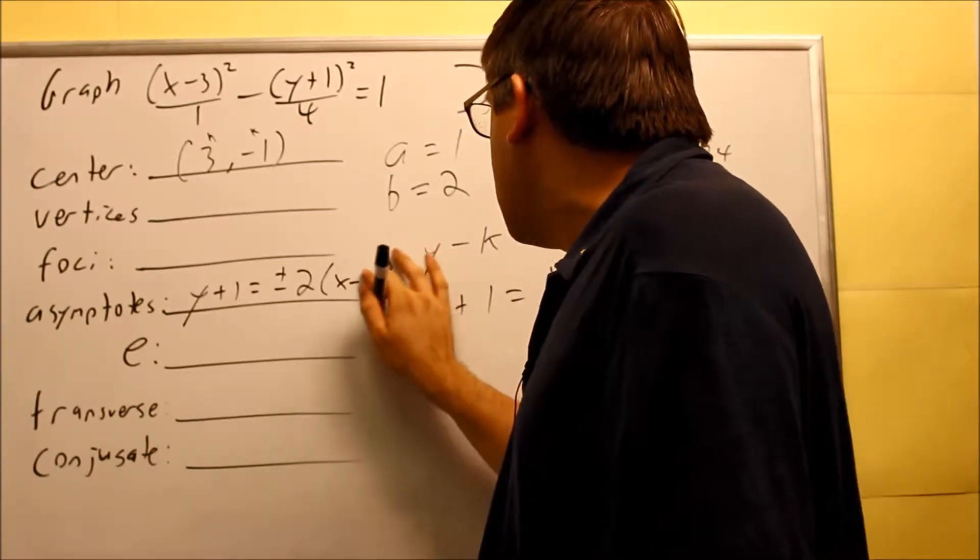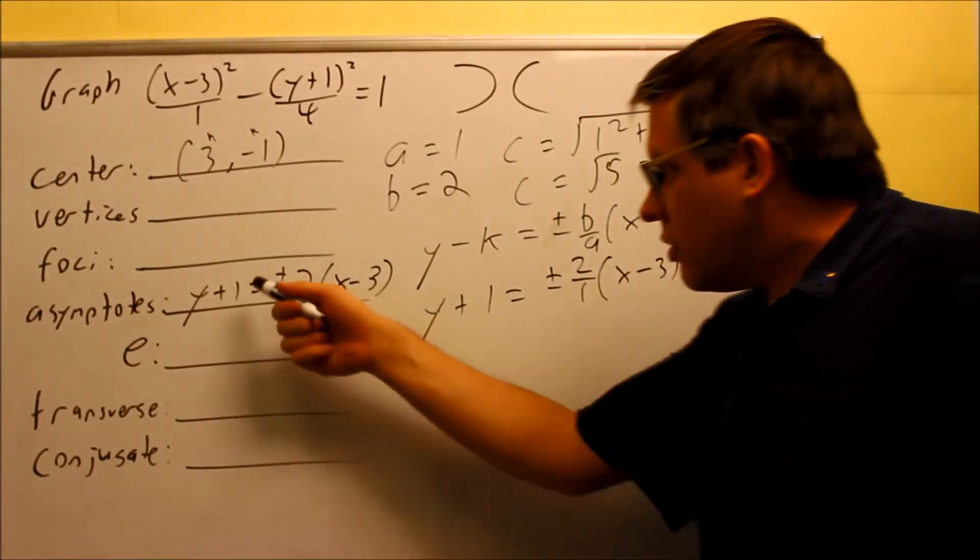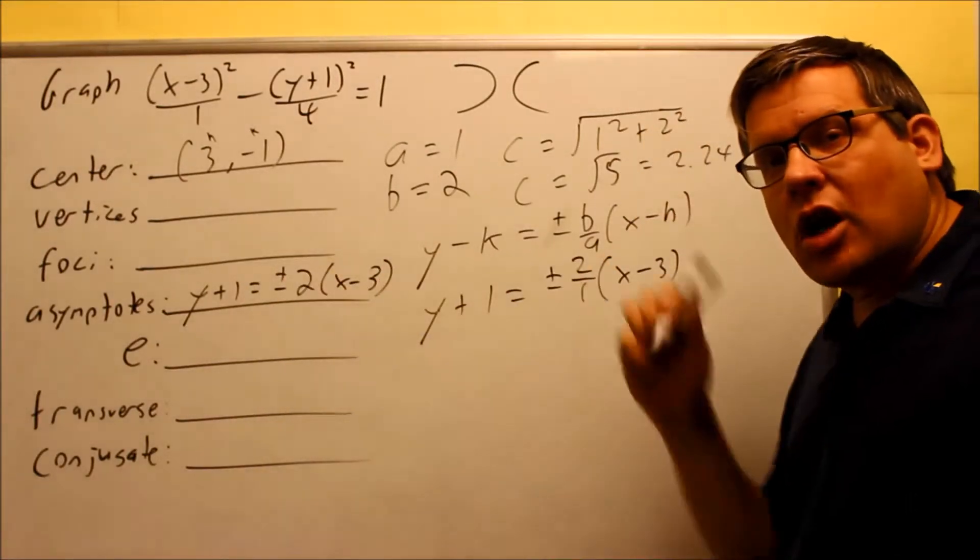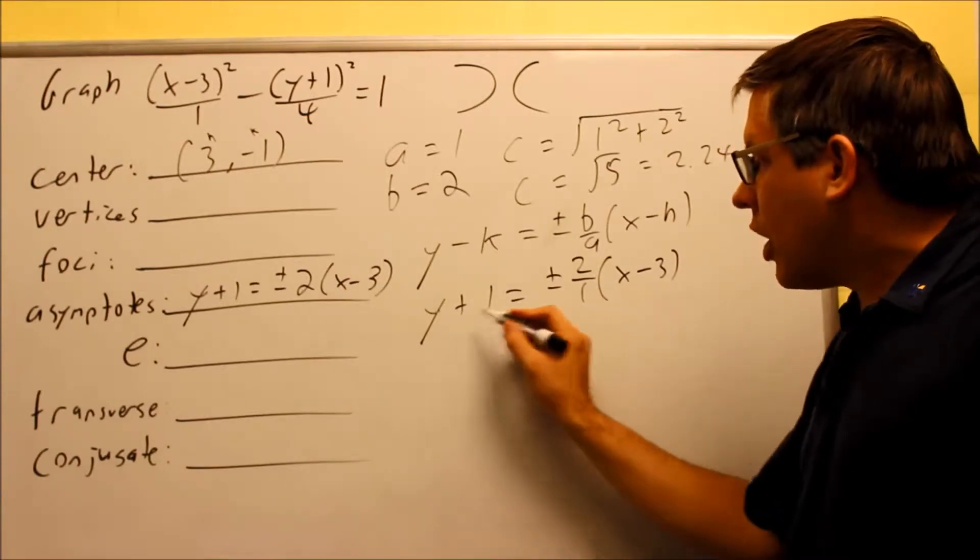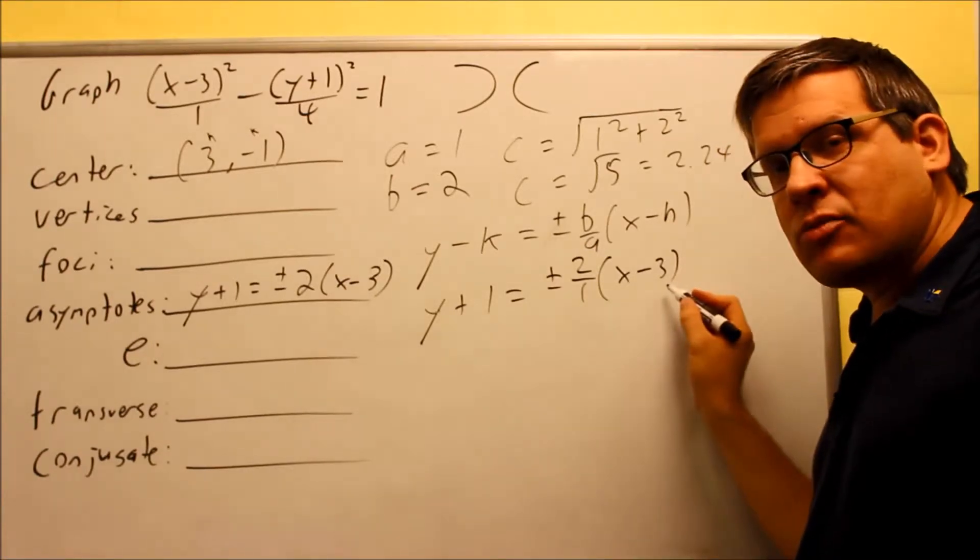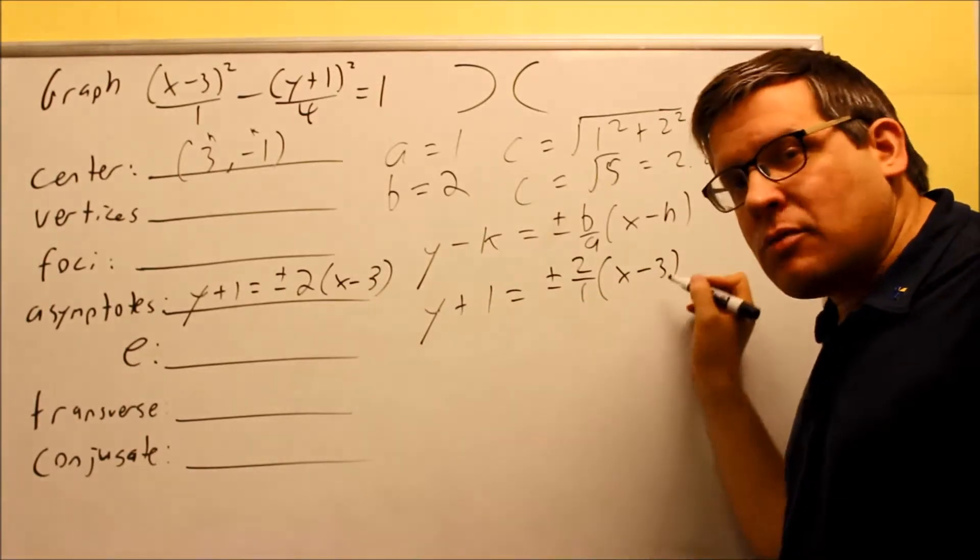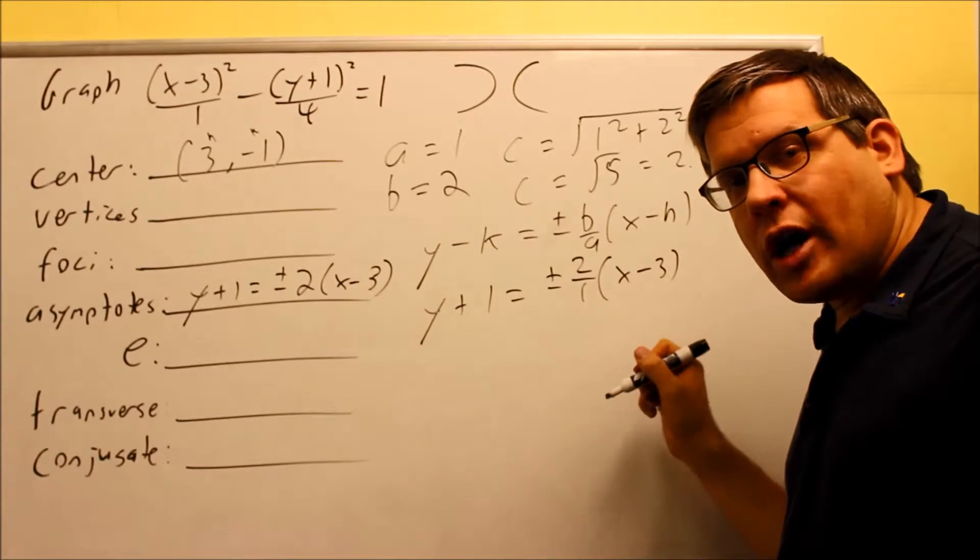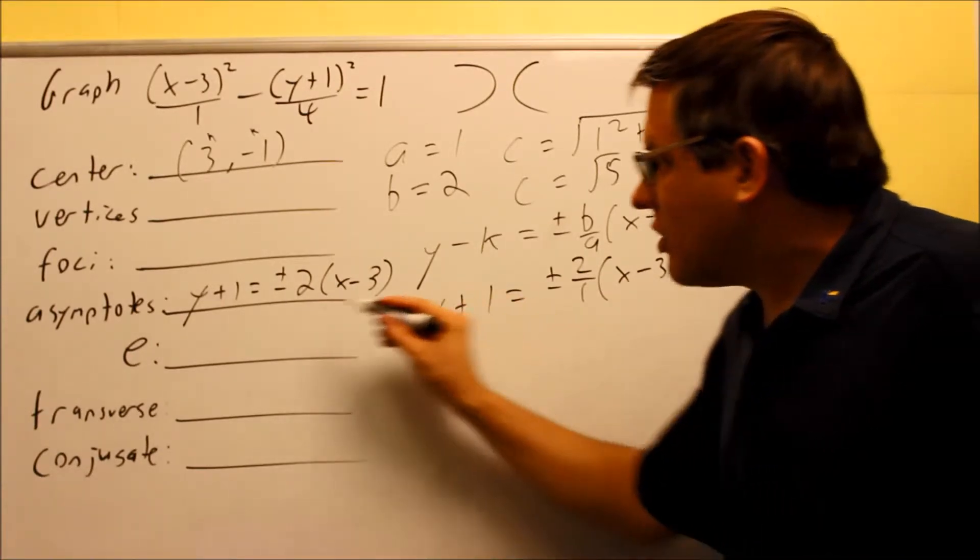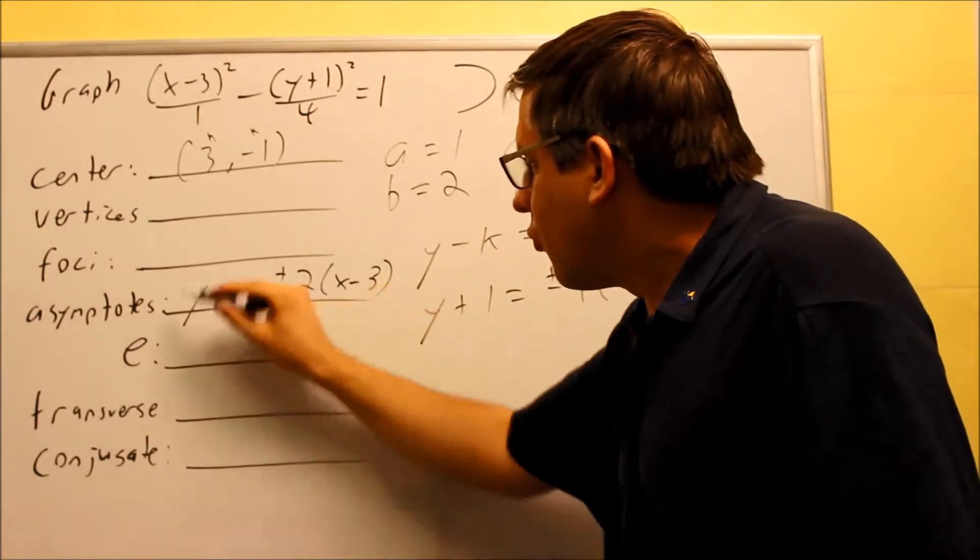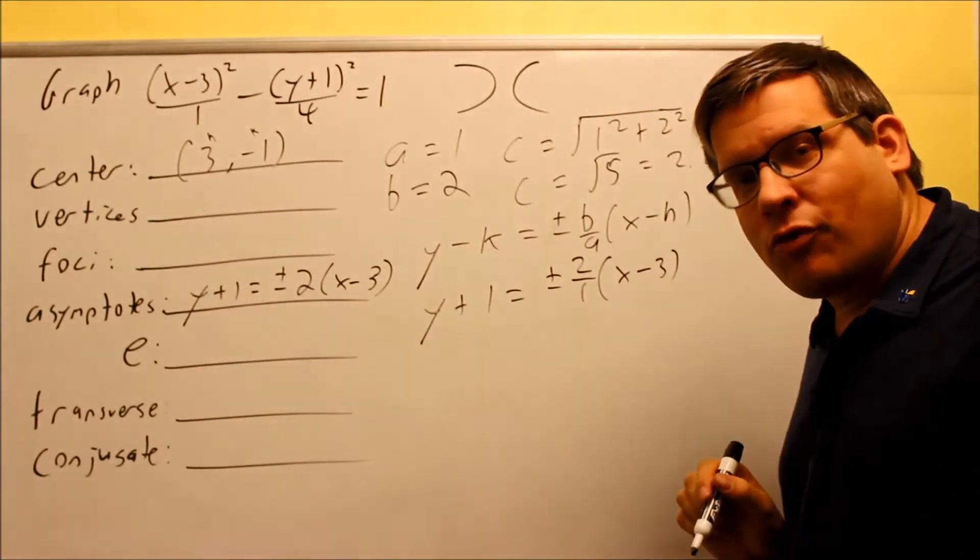Now, if you're doing this online, it may ask you for the equation solved for Y. In that case, what you'd have to do is you'd have to do one equation of Y plus 1 equals positive 2 times X minus 3, then you would do Y plus 1 equals negative 2 times X minus 3, and you would solve for Y for each of those individually. Now, in my test, you don't have to worry about doing that. In my test, it's actually okay to leave it in this format just like this. So we're going to leave it in the point-slope form.